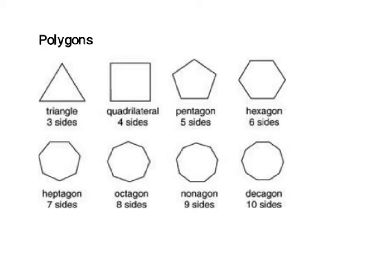Now we're going to look at drawing shapes on the coordinate plane. The different corners, or vertices, of shapes are going to be at certain coordinates. Let's review the names of different polygons: three sides is a triangle, four sides is a quadrilateral, five sides is a pentagon, six sides is a hexagon, seven sides is a heptagon, eight sides is an octagon, nine sides is an octagon, and ten sides is a decagon. You're going to need to know those vocabulary words to be successful.